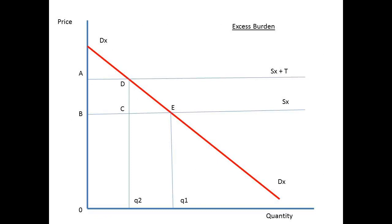The cost of adjusting to a tax change is called the excess burden. On the map shown, the demand curve is dx dx. The supply curve before tax is sx, and after tax it becomes sx plus t. So the quantity consumed now falls from q1 to q2. The tax revenue is represented by rectangle ABCD. The loss of consumer surplus by triangle CDE, and this is called the excess burden.